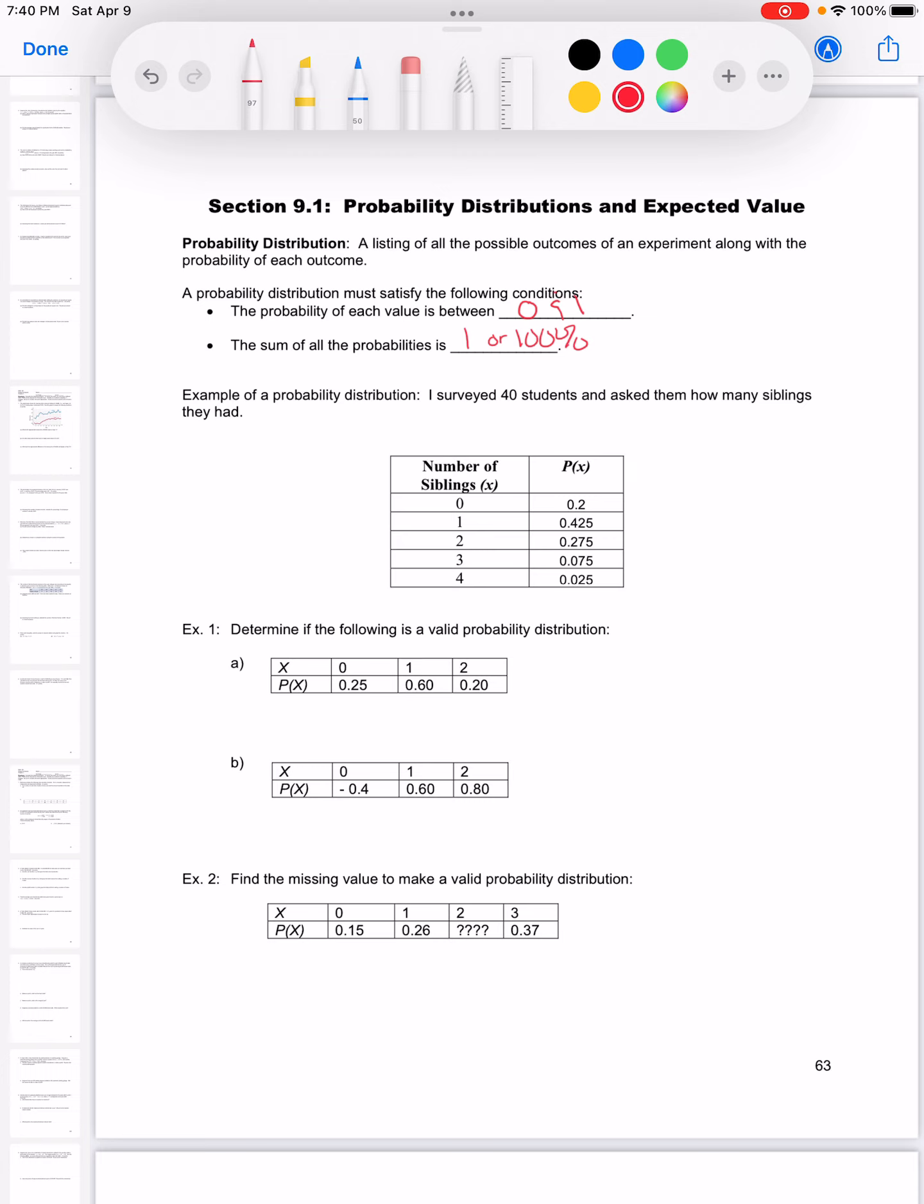For example, if we say there's a 60% chance of rain today, that means there's a 40% chance of it not raining. 60 plus 40 is 100%. It's either going to rain or it's not going to rain.